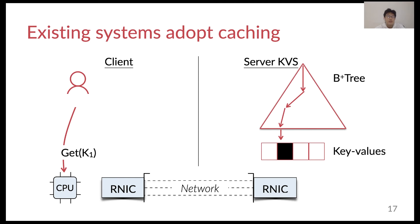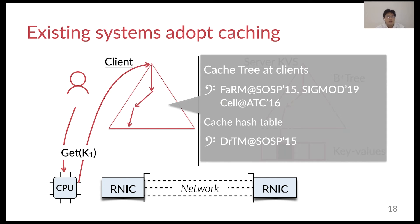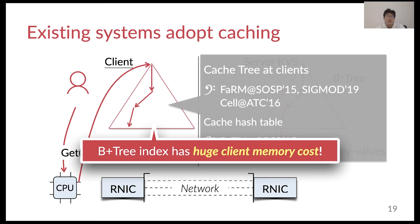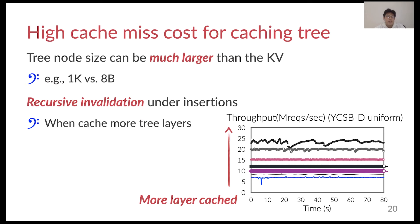A common solution to overcome this issue is to use index caching. This means that we can cache the server B-tree at the client. Using the cached copy of the index, the client can locally traverse the B-tree without using additional round-trip times. However, one drawback of tree-based index caching is that it consumes a huge amount of memory at the client. Further, it has huge cache miss cost. For example, when there is a cache miss, one has to fetch the entire B-tree internals from the server to the client.